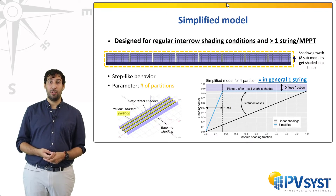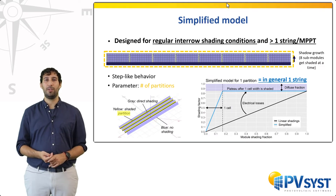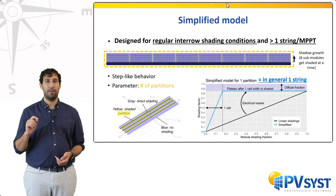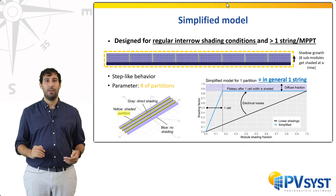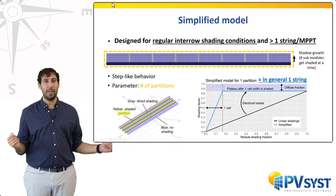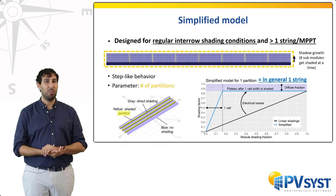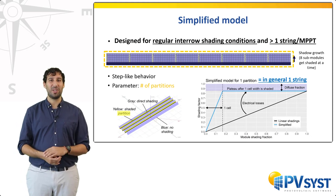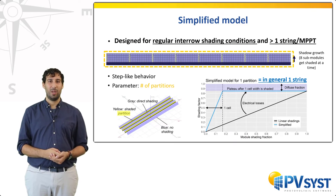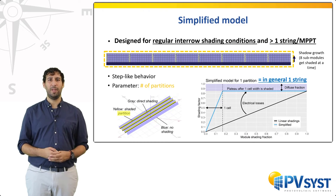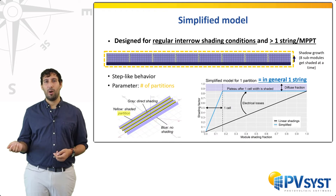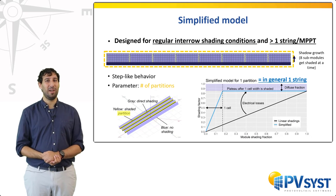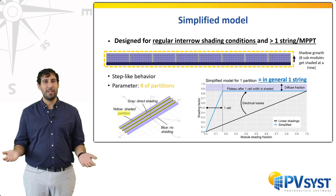In this situation, the mismatch between strings will cancel the contribution of the shaded string, as long as at least one cell within that string is shaded. This can be represented in the plot on the right. The x-axis describes the fraction of the total string height being shaded; the y-axis is the shading loss factor, equal to 1 when the production is 0. You can see that after one cell is covered, the shading loss factor is at its maximum. While this model was designed to be applied string by string, it can be extended to more general situations. The generalization is simple: instead of considering a string, one may consider a subdivision of a string — called a partition — and apply the same model. For example, in the case of a string of half-cut modules, one may apply the model over the lower half and then over the upper half.